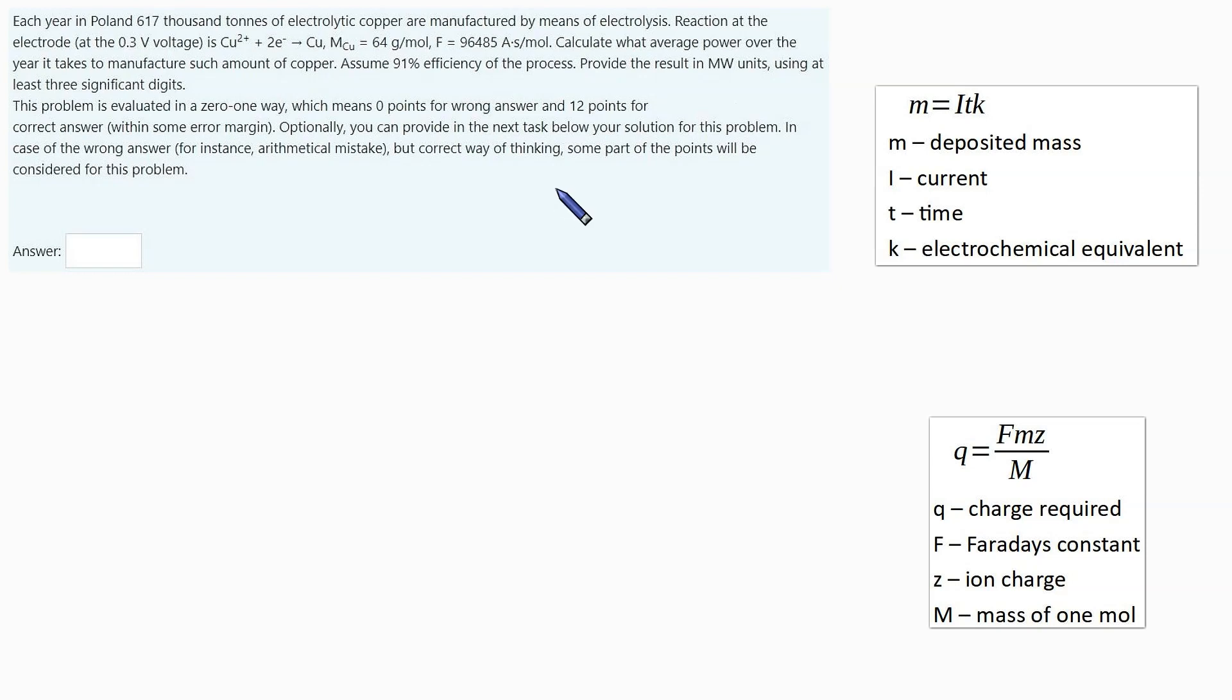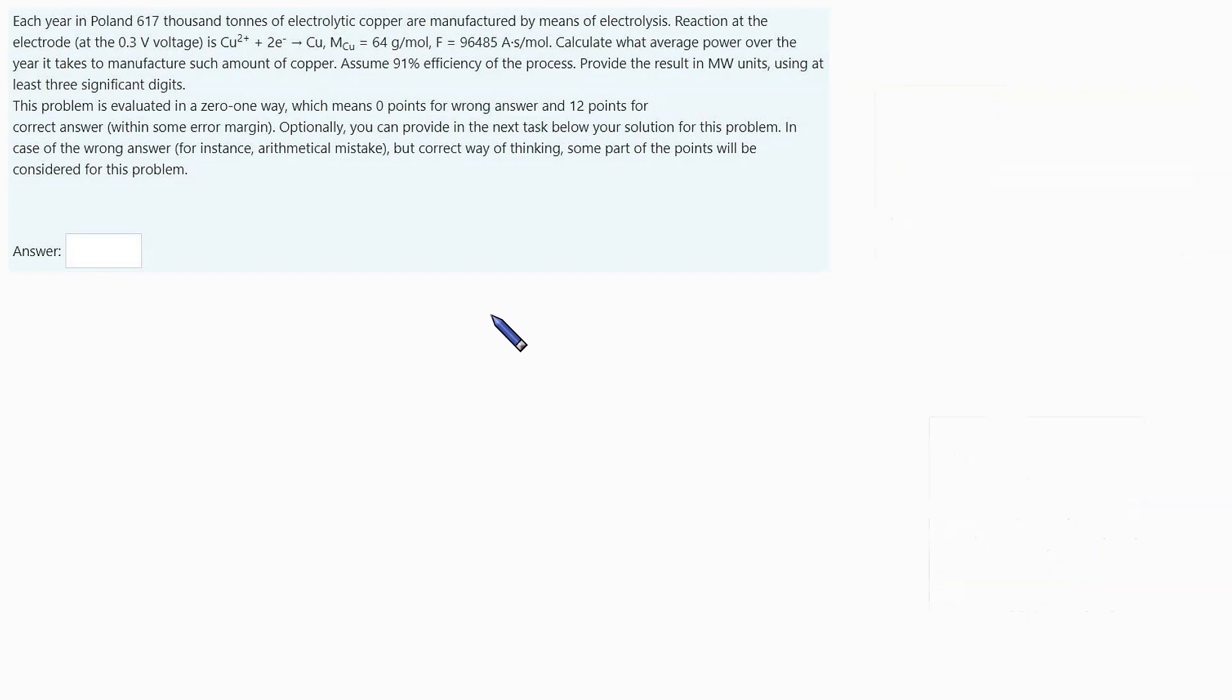Now, to the solution. Mass of copper: 617,000 tons, now in kilograms. I want to know how many copper atoms is in this, because I know that I will need two elemental charges for every atom. This formula tells me that.